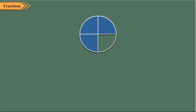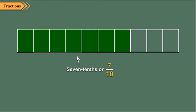Now observe this circle. It is divided into four equal parts. Out of four equal parts, three parts are shaded. Therefore, the shaded part is three fourths of the whole. We write it as three upon four and read it as three upon four. Now observe this rectangle. It is divided into ten equal parts, and out of them, seven parts are shaded. Therefore, the shaded part is seven tenths of the whole. It is written as seven upon ten and read as seven upon ten.